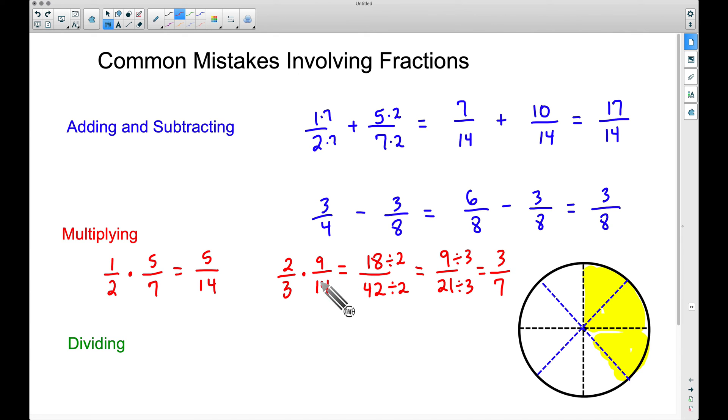Therefore, 2/3 times 9/14, that is 3/7. But let me show you something else. This is a cool trick with multiplying fractions. 2/3 times 9/14. We can actually simplify before we multiply. Take the 2 and the 14. If we divide these by 2, 2 divided by 2 gives you 1, and 14 divided by 2 gives you 7. I am technically canceling things out at the top and bottom.